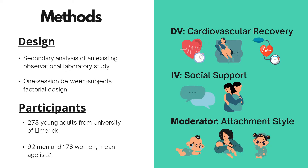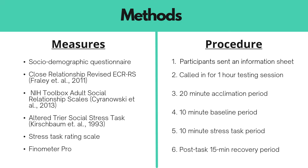The study is a secondary analysis of an existing observational laboratory study using a one-session between-subjects factorial design. There were 278 participants — young adults from the University of Limerick — of whom 92 were men and 178 were women, with a mean age of 21 and an age range of 18 to 58. The dependent variable was cardiovascular recovery measured for systolic blood pressure, diastolic blood pressure, and heart rate. The independent variable was social support using emotional and instrumental support subscales, and the moderator was attachment style using anxious and avoidant attachment subscales.